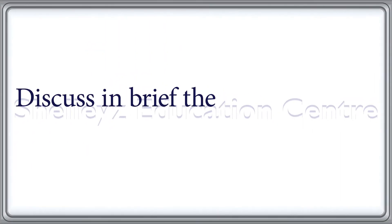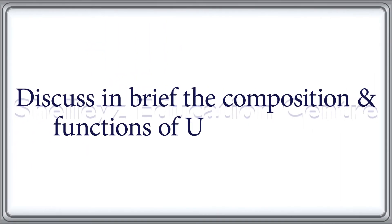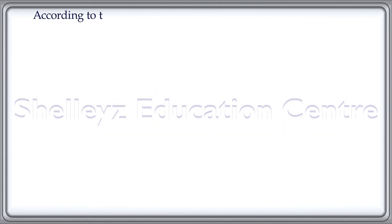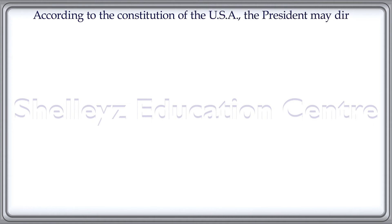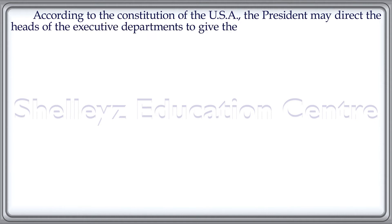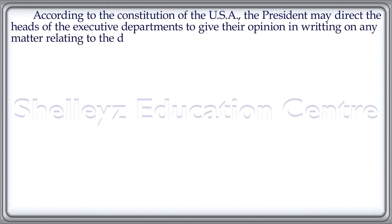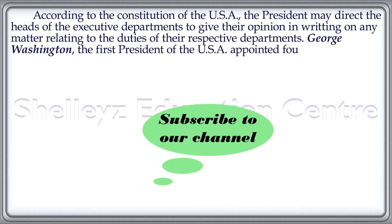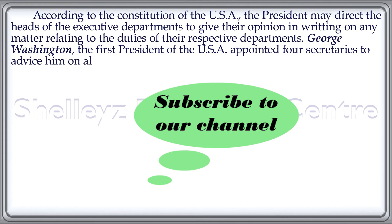According to the Constitution of the USA, the president may direct the heads of the executive departments to give their opinion in writing on any matter relating to the duties of their respective departments. George Washington, the first president of the USA, appointed four secretaries to advise him on all important subjects of their departments.